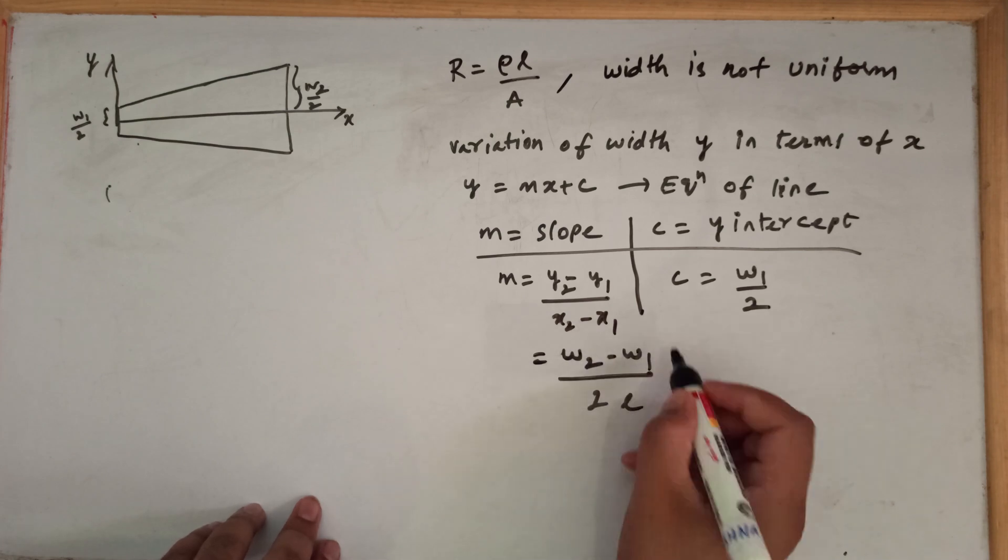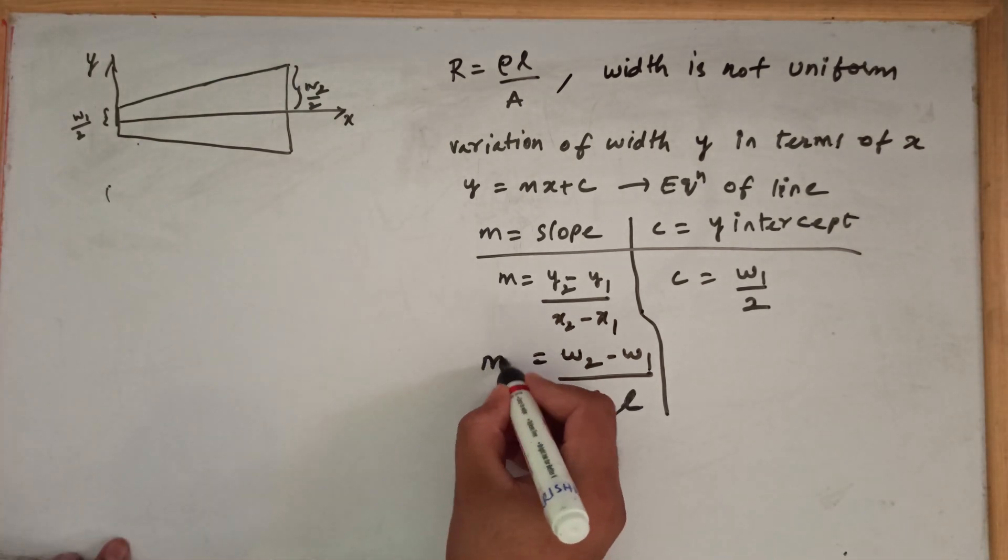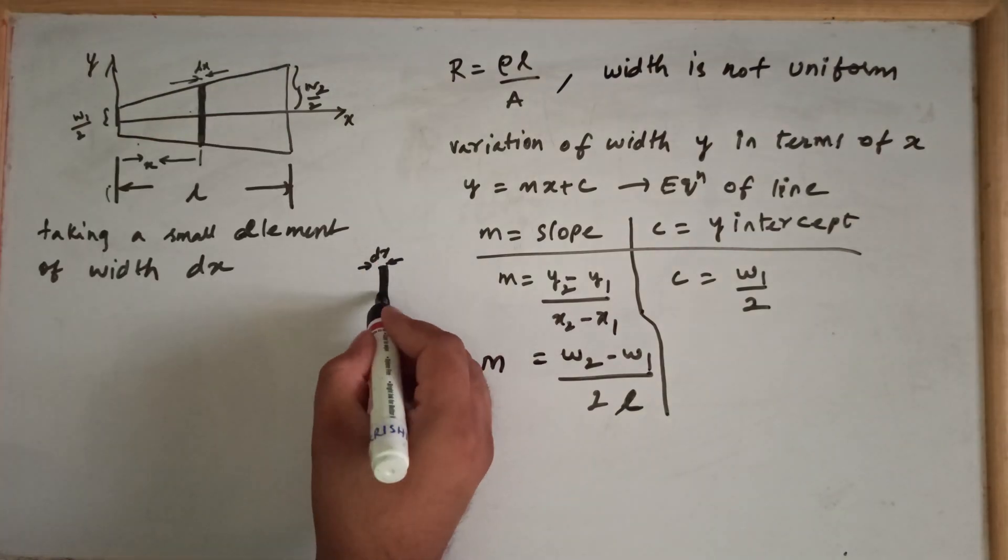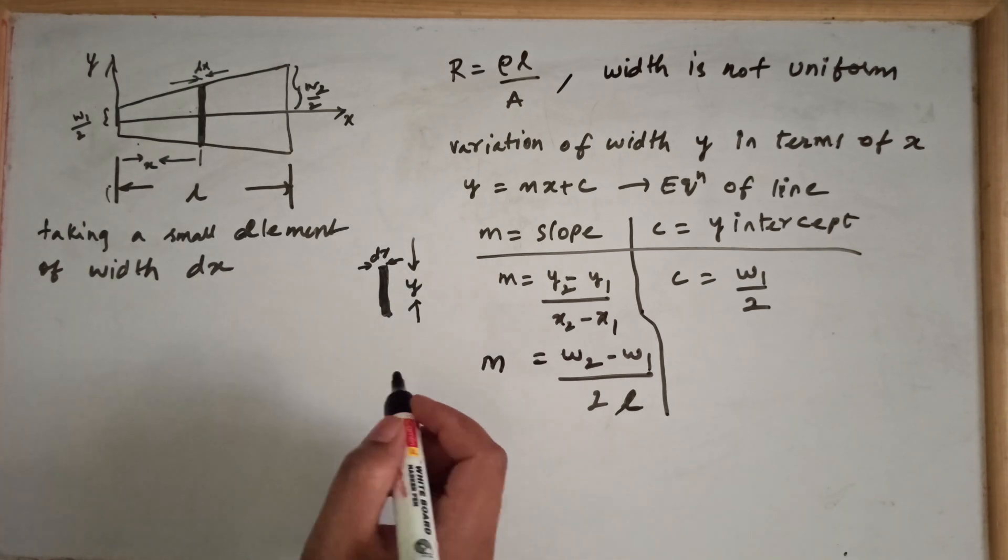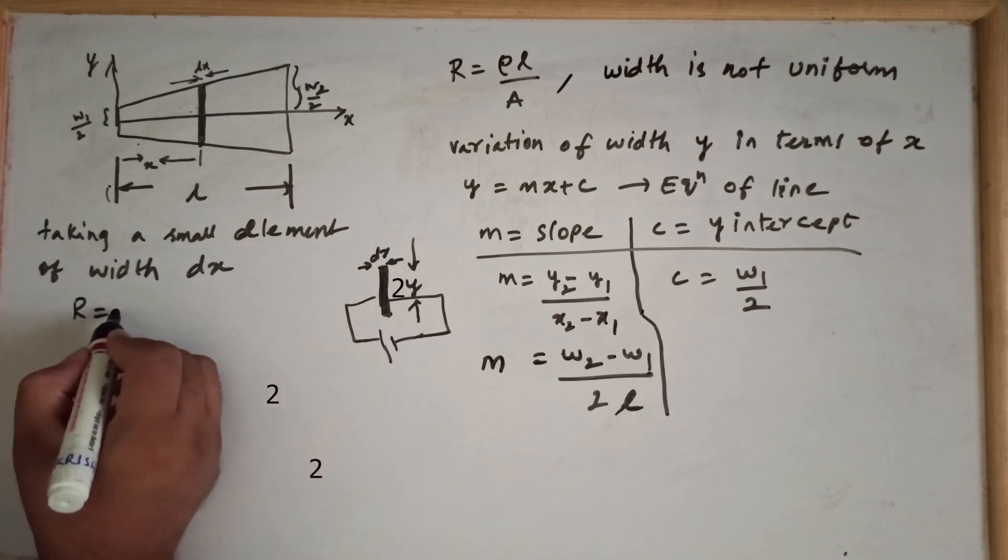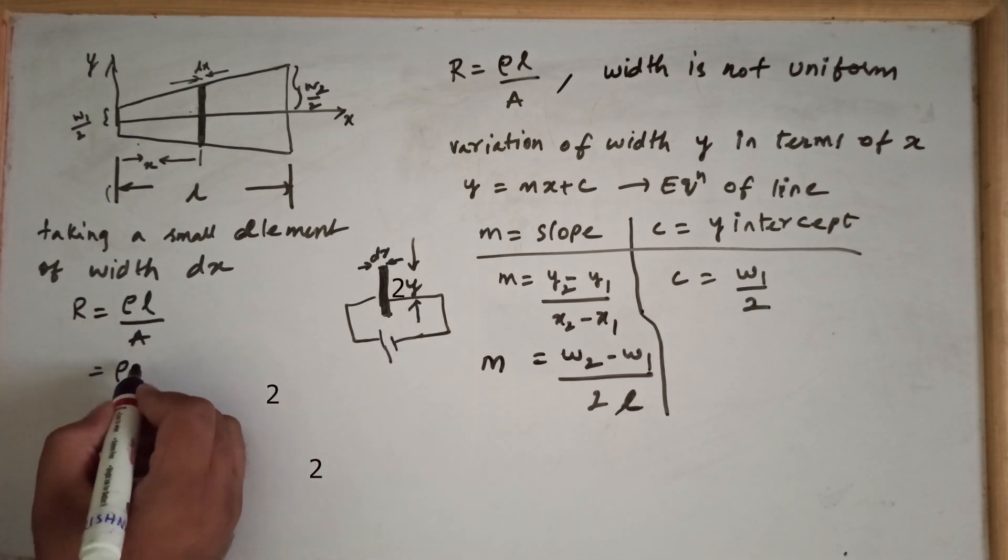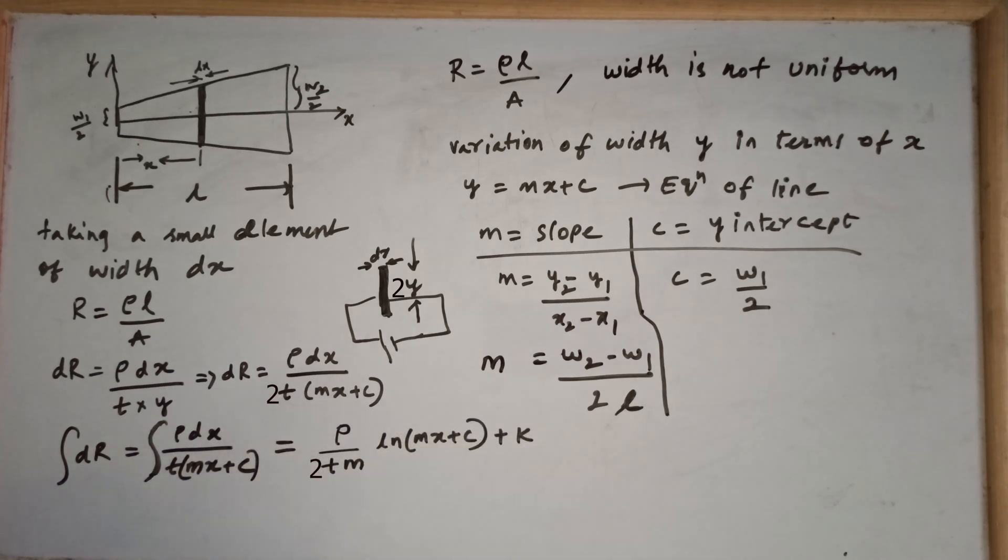We cannot directly use the formula R equals ρL by A since the width is not uniform. So we try finding the resistance of a small element whose length is dx units and width would be 2y units. Since the element is small enough, I can approximate its width to be constant. I have also assumed the vertical thickness to be uniform. Now on integrating it over its length, we see that the curve is natural log of the length.